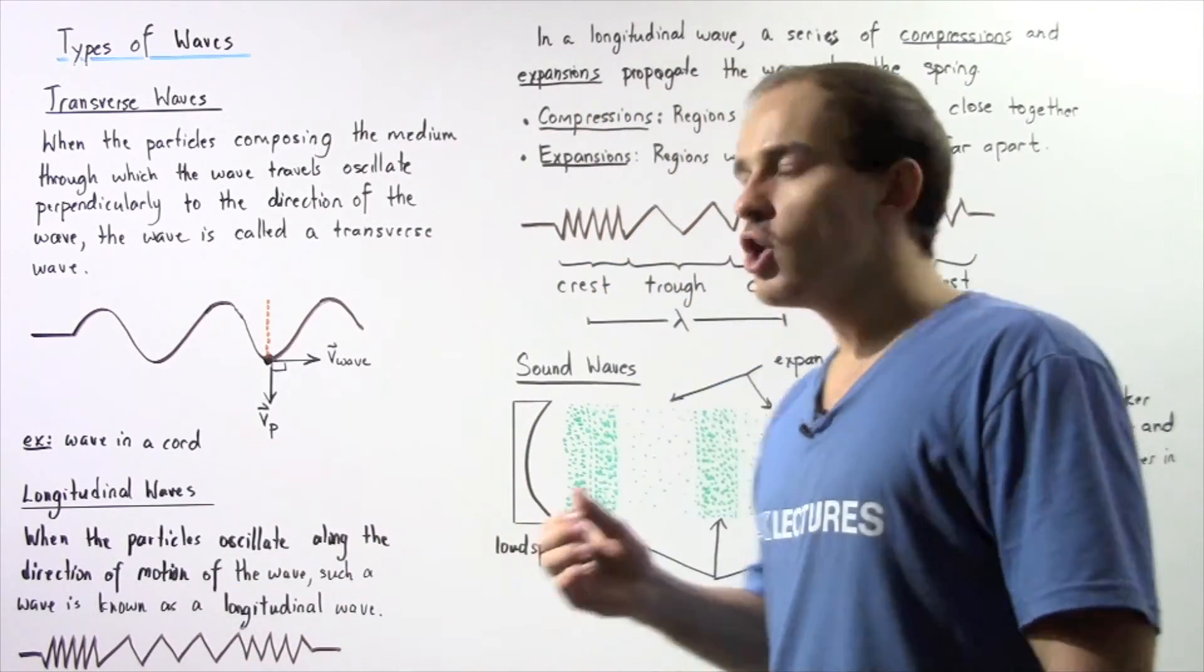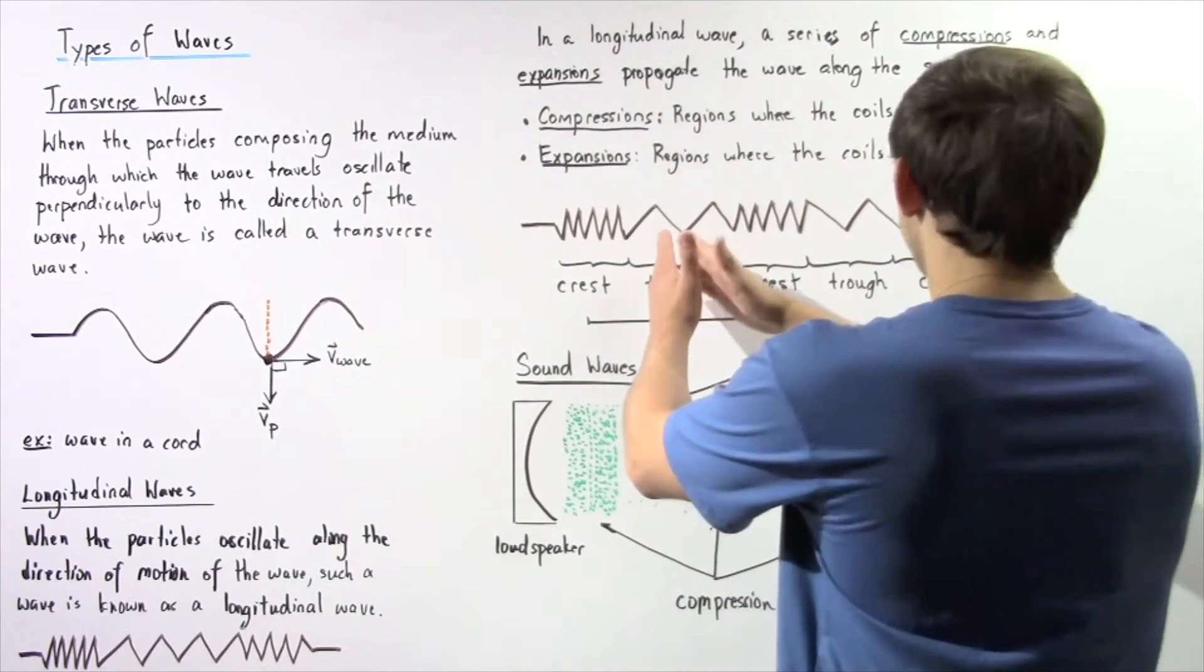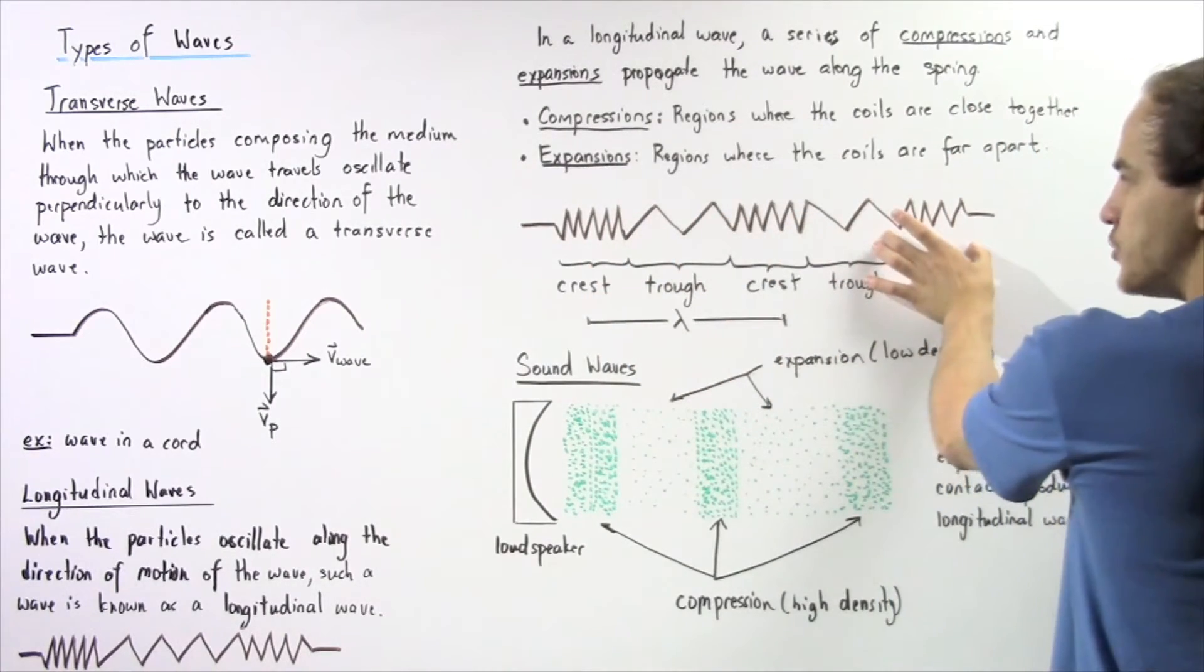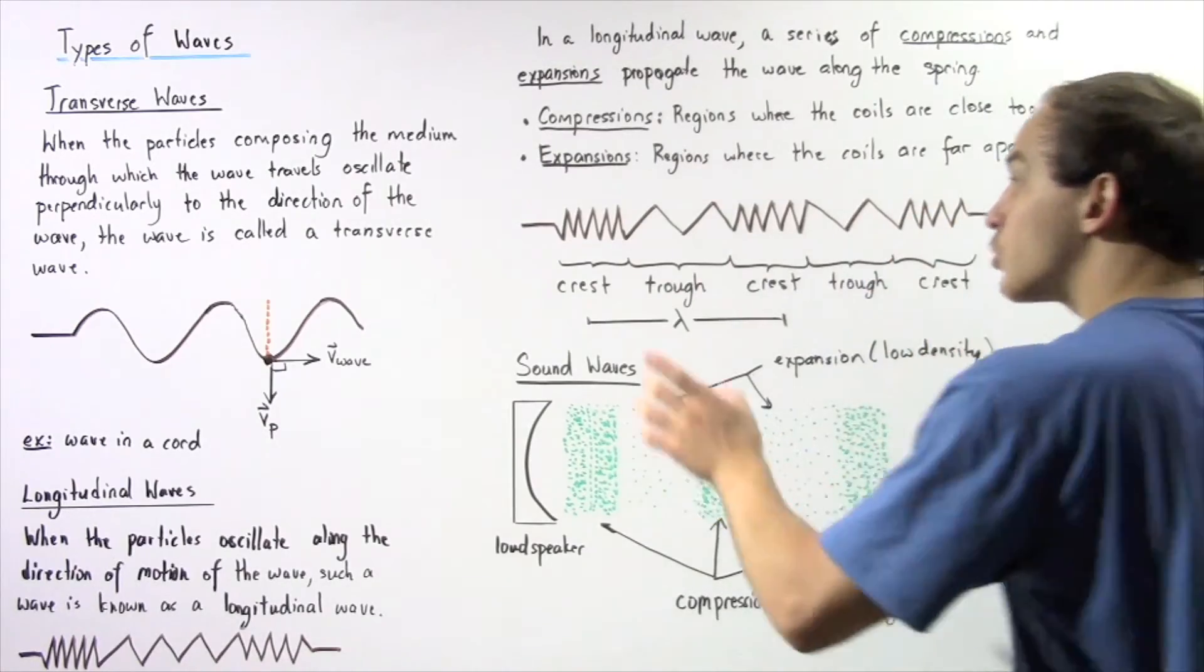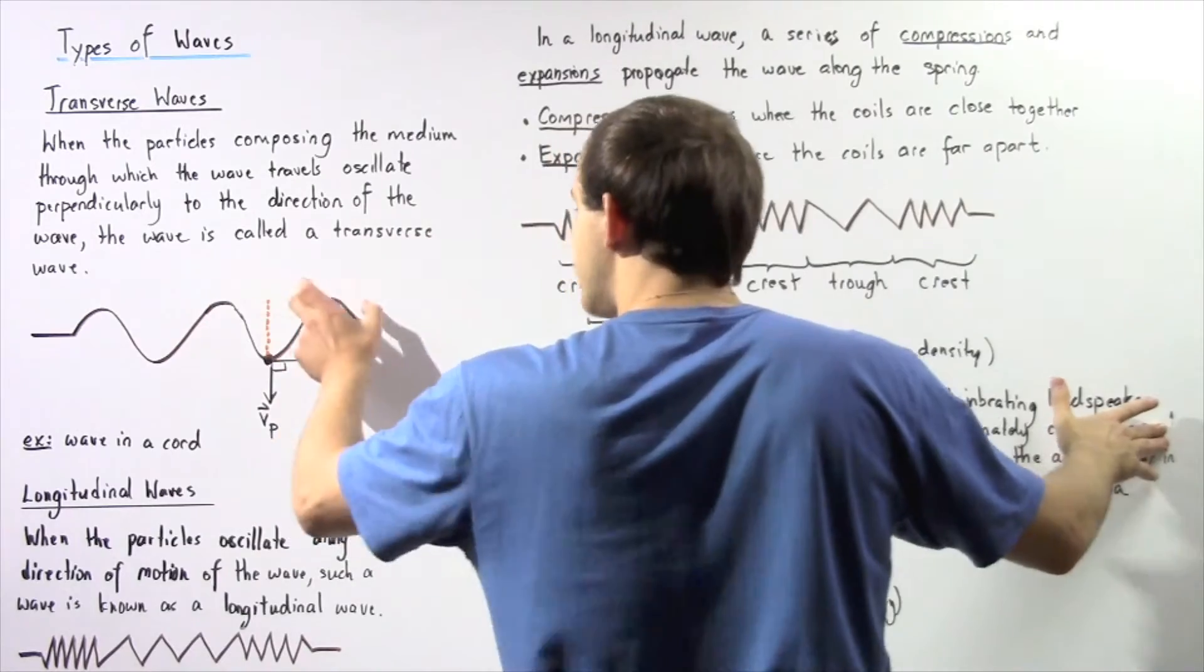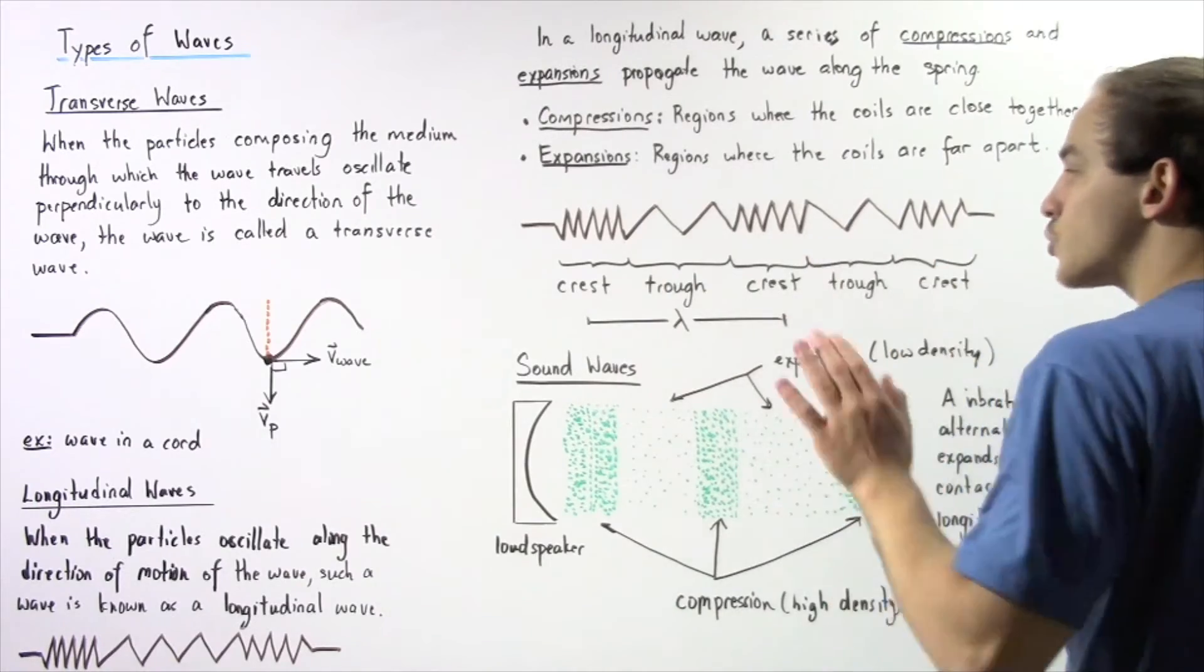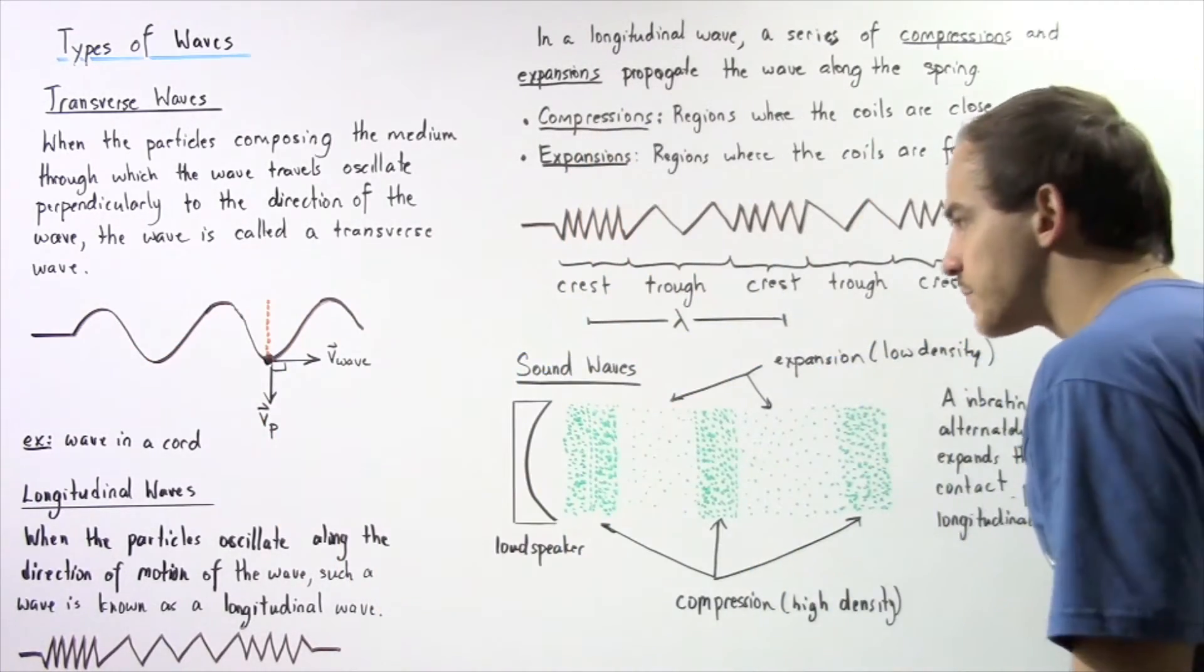And our expansion regions are simply defined as regions where the coils are far apart. So let's examine the following spring in closer detail. These are our compression regions, and these compression regions correspond to the crests of our transverse waves. While the troughs, these expansion regions correspond to the troughs of our transverse wave.